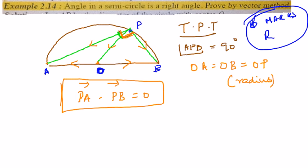How can I write PA vector? PA vector can be written as, it's nothing but PO vector plus OA vector. PA plus OA vector.